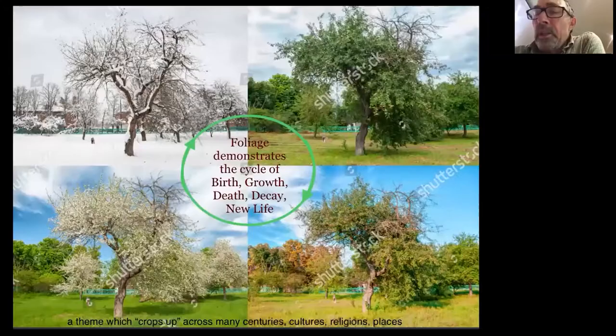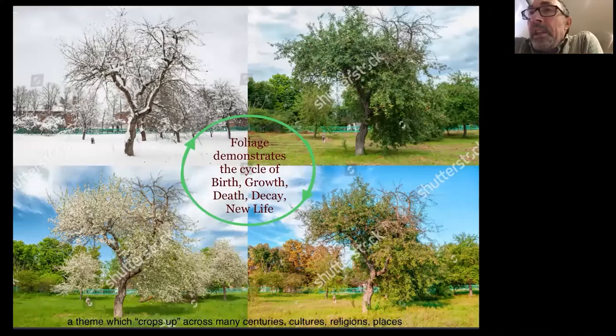As we all know, foliage demonstrates the cycle of birth, growth, death, decay and new life. As the seasons move from one to the other, foliage - whether it be trees, plants or anything else - cycles from life to death and back to life again.